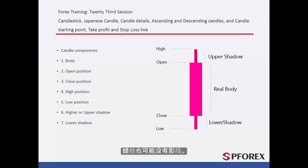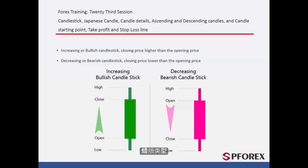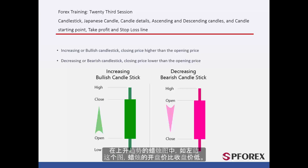There would be no shadow on some candles. Candlesticks can be categorised into two types: increasing or bullish, and decreasing or bearish. In an increasing or bullish candlestick, the open position is located below the closed position, as illustrated in the left figure.